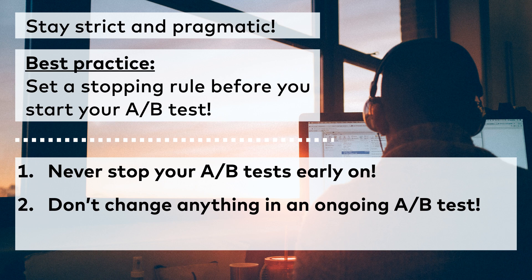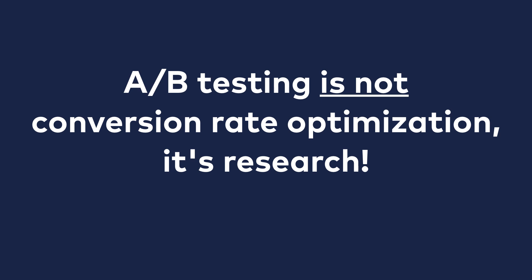Let's say that by the end of your test, your version B loses with 99% statistical significance. Remember, a losing version B is not a failure — that's useful information. It means that your hypothesis didn't work, but you will be able to use this knowledge in your future A-B tests. However, if you change anything in your ongoing experiment before you could draw your conclusions, you will lose this information and mess up all the results you could have gotten from your A-B test.